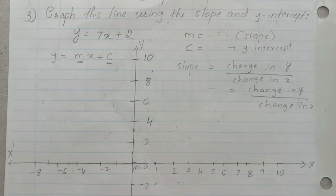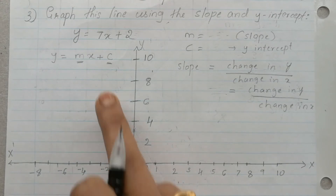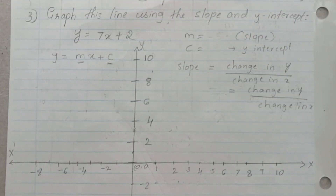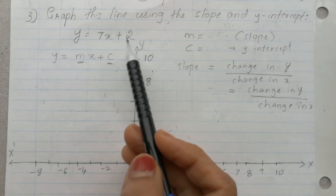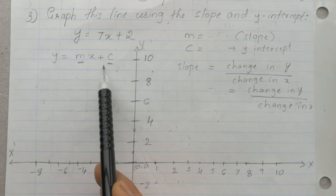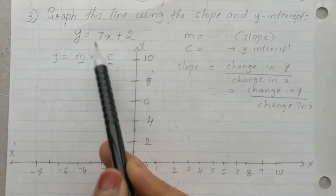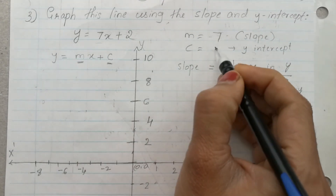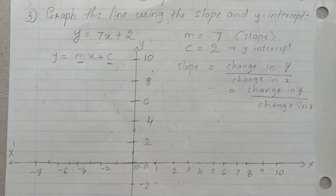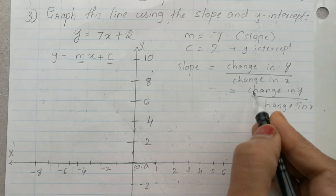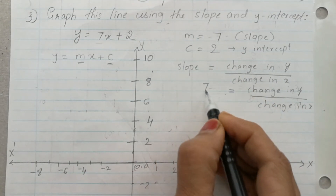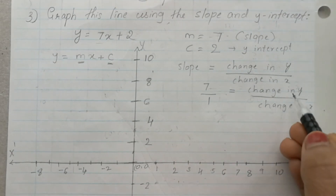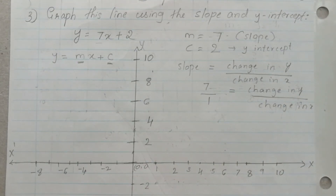Question number 3: graph the line y is equal to 7x plus 2 using slope and y-intercept. Compare the given line to y is equal to mx plus c, where slope m is 7 and y-intercept c is 2. Slope is 7, which equals change in y over change in x, so 7 over 1 — change in y is 7 and change in x is 1.